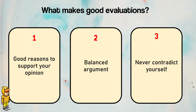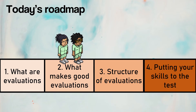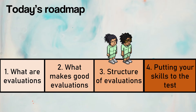Third, never contradict yourself. Contradiction means you say one thing and then say the opposite. For example, saying 'channel widening is very effective in Vietnam' and then saying 'channel widening is not very effective in Vietnam' — that is contradicting yourself. So good evaluations require good reasons, a balanced argument, and never contradicting yourself.